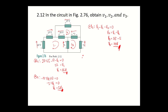Therefore, your V1 is equal to 35 volts, your V2 is equal to 5 volts, and your V3 is equal to 30 volts.